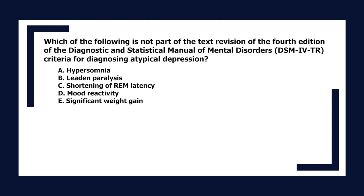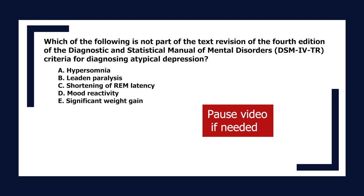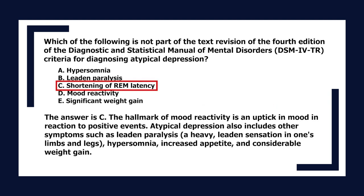Which is not part of the DSM-IV-TR criteria for diagnosing atypical depression? A. Hypersomnia, B. Leaden paralysis, C. Shortening of REM latency, D. Mood reactivity, E. Significant weight gain. The answer is C. The hallmark of mood reactivity is an uptick in mood in reaction to positive events. Atypical depression also includes leaden paralysis, a heavy leaden sensation in one's limbs and legs, hypersomnia, increased appetite, and considerable weight gain.